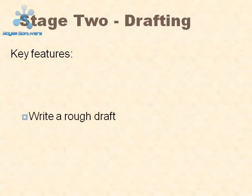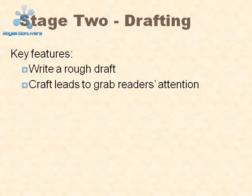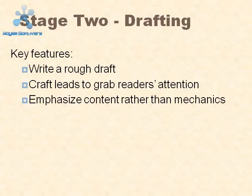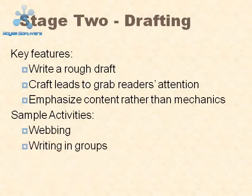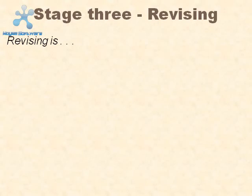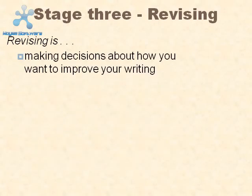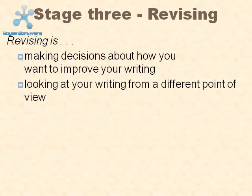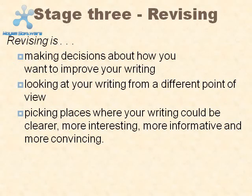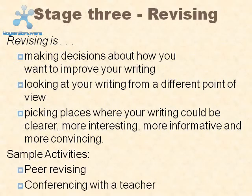Stage two — drafting: key features are write a rough draft, craft leads to grab readers' attention, and emphasize content rather than mechanics. Sample activities include webbing and writing in groups. Stage three — revising: revising is making decisions about how you want to improve your writing, looking at your writing from a different point of view, picking places where your writing could be clearer, more interesting, more informative, and more convincing. Sample activities include peer revising and conferencing with a teacher.